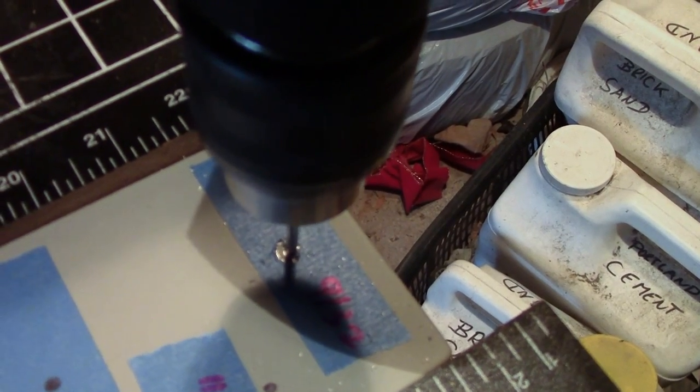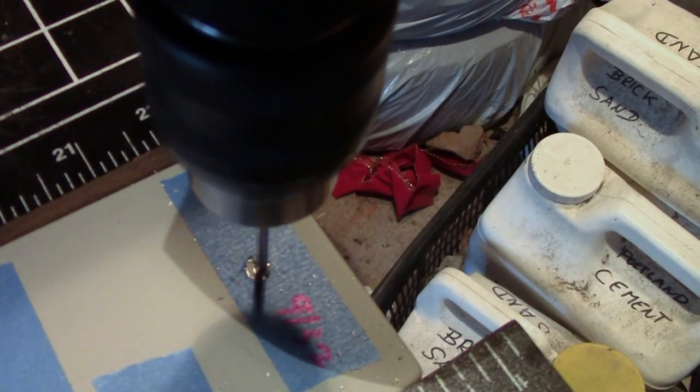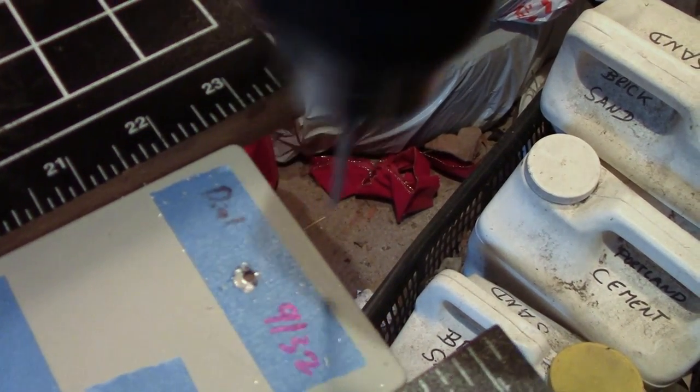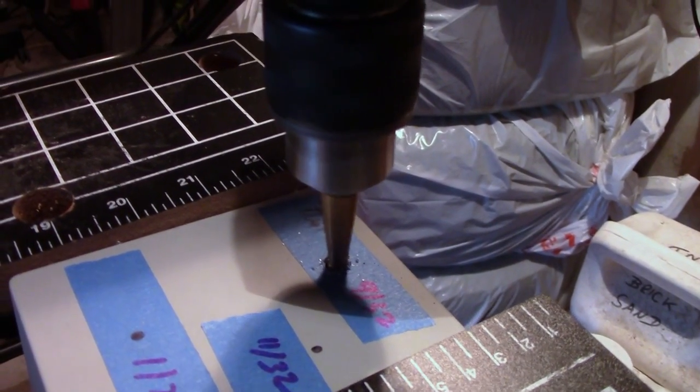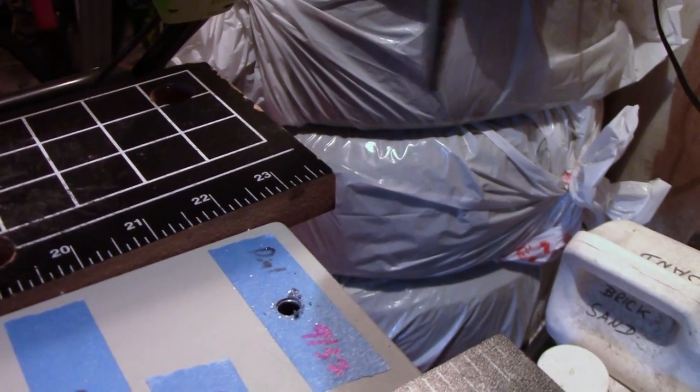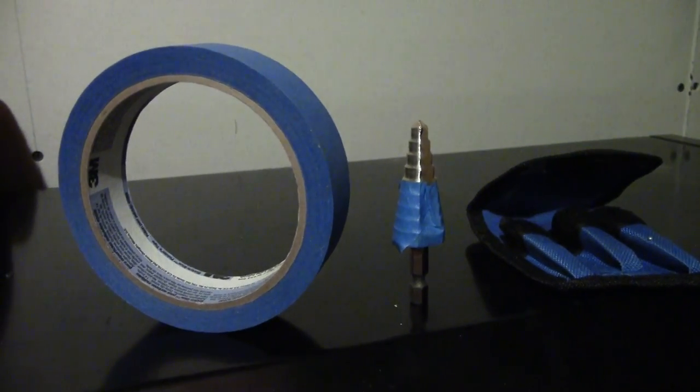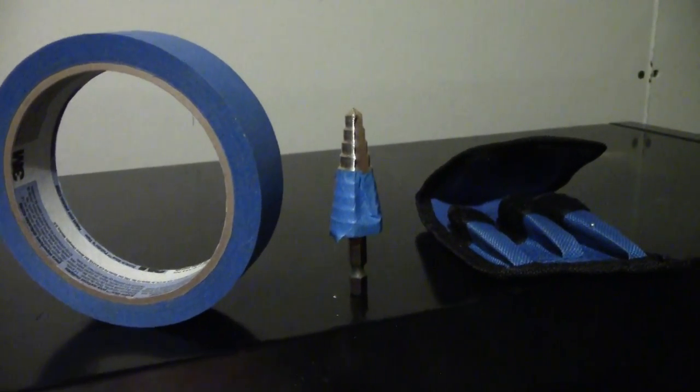When drilling holes first use a small drill bit to create a pilot hole. Then drill the hole using the step drill bit. To ensure you drill to the proper size you may want to mark the step drill bit with a piece of tape above the desired size.